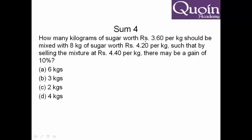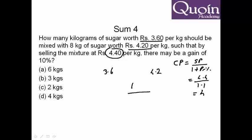You are mixing sugar worth Rs.3.6 per kg and Rs.4.2 per kg to get some value. So we take 3.6 and 4.2. But understand 3.6 and 4.2 are cost price, whereas 4.4 is selling price. We have to first convert the selling price to cost price. You can use the formula: cost price equals selling price divided by 1 plus profit percent. So cost price comes to 4.